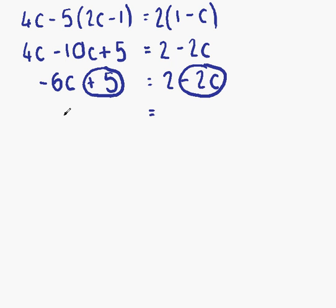So first of all, writing down the things that are staying where they are. We have minus 6c. And we have 2 on this side. The first thing that's going to move is the plus 5. Change side, change sign. It's minus 5. Then we have minus 2c. Change side, change sign. It becomes plus 2c.